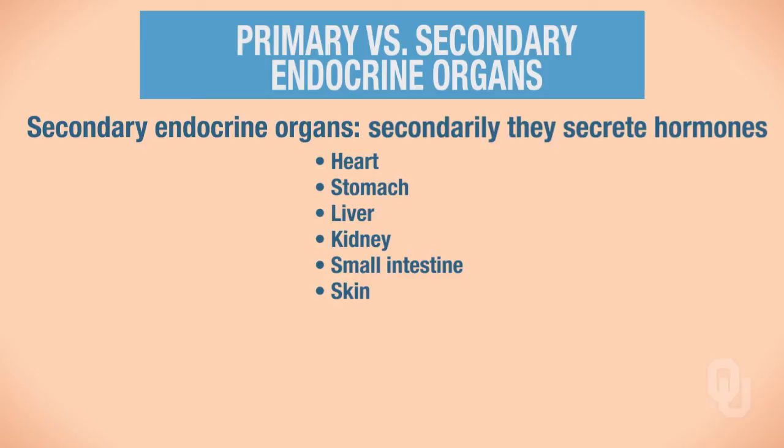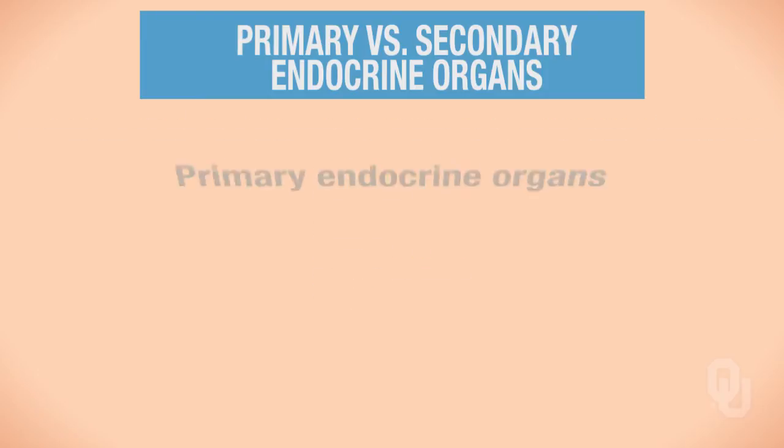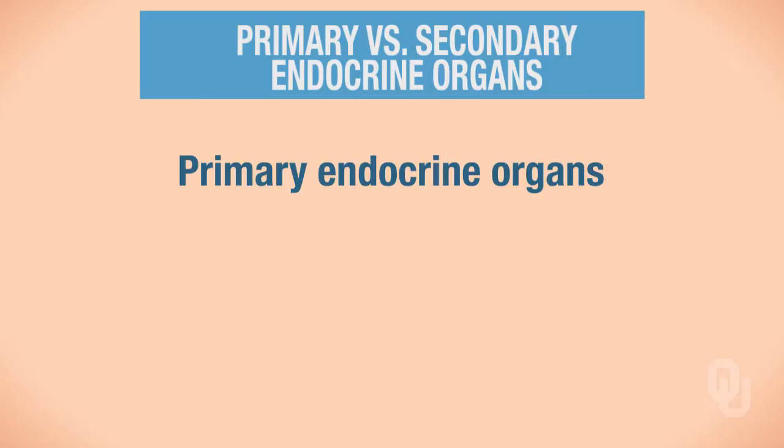Later, when we get to the cardiovascular system, we'll discuss hormones secreted by the heart. And once we get to regulation of the gastrointestinal system, we will discuss various hormones associated with the gastrointestinal system, such as the stomach, the liver, and the small intestine. So once again, the focus for the endocrine system is the primary endocrine organs.